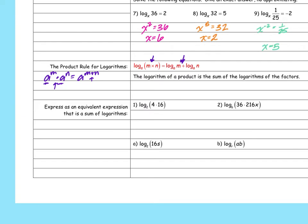The directions say to express an equivalent expression as a sum of logarithms — just expand it out, not simplify. Because we have multiplication, it becomes addition. So I get log base 2 of 4 plus log base 2 of 16. I can have more than two logarithms if more than two things are multiplied together.